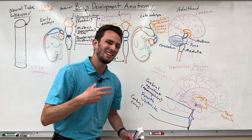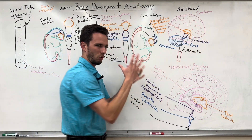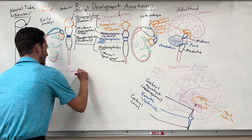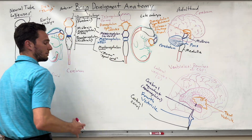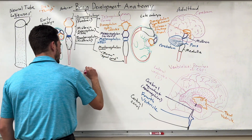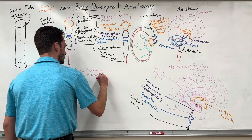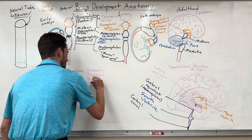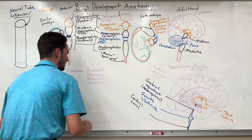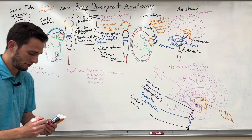Now let's get into functions. What do these structures actually do? The cerebrum is far and away the most complex — it's the part of the brain that makes you, you. In the cerebrum, we have functions like personality, voluntary movement, perception of different stimuli, deep emotions and responses, and memory storage. Those are the main functions of the cerebrum.